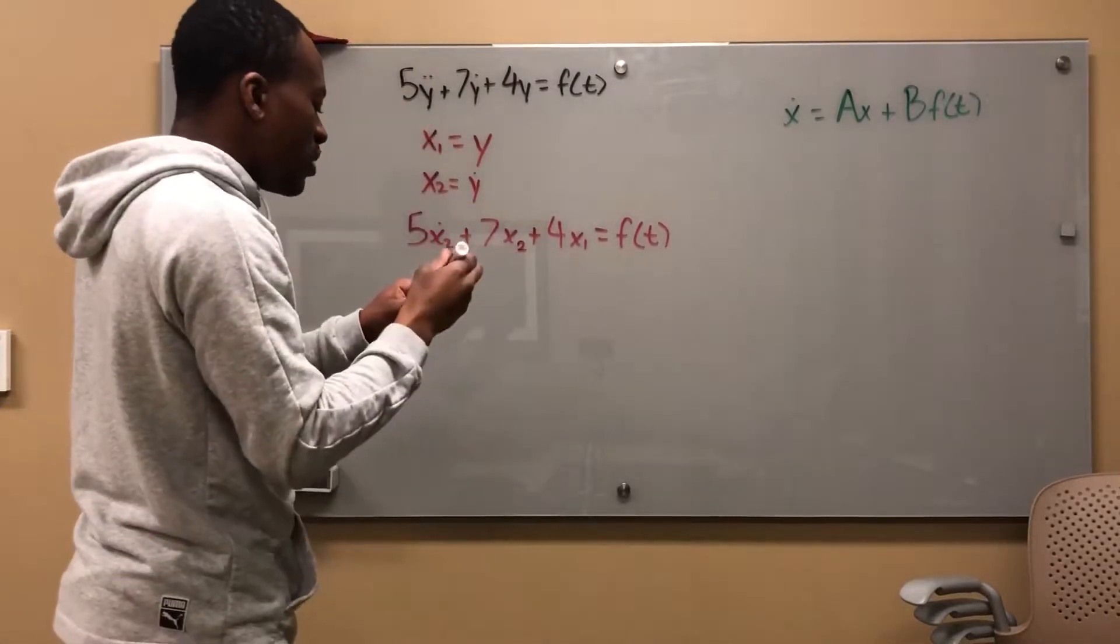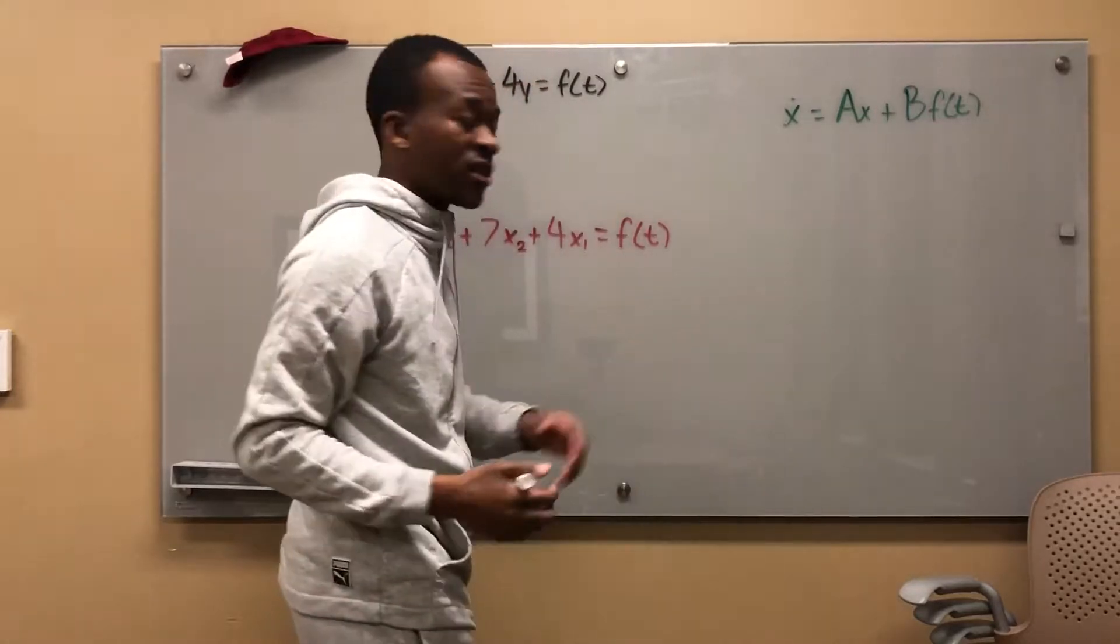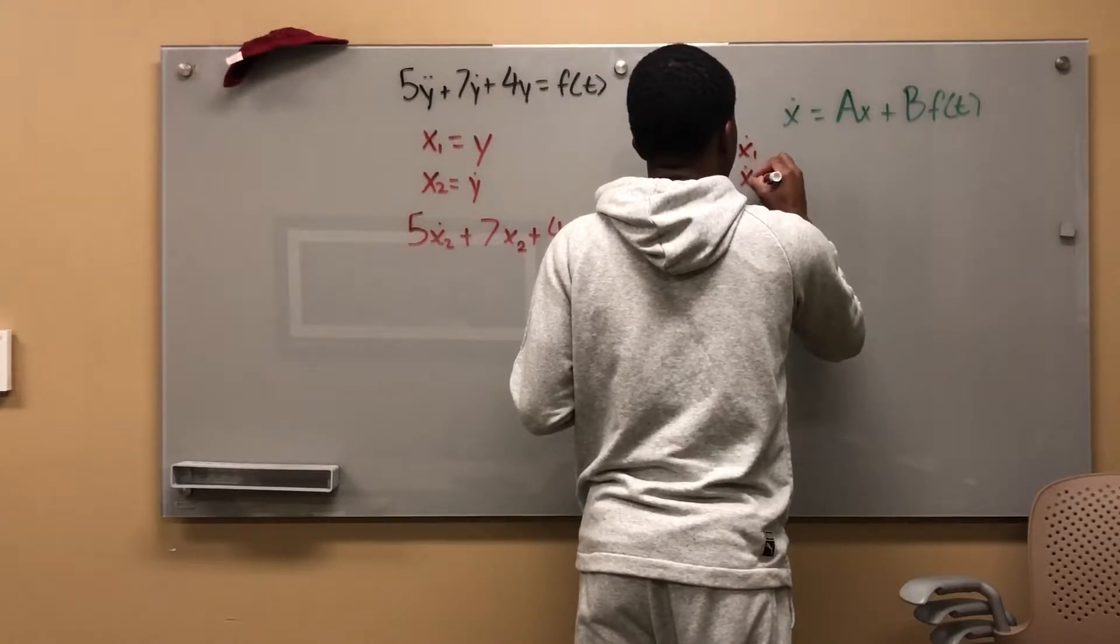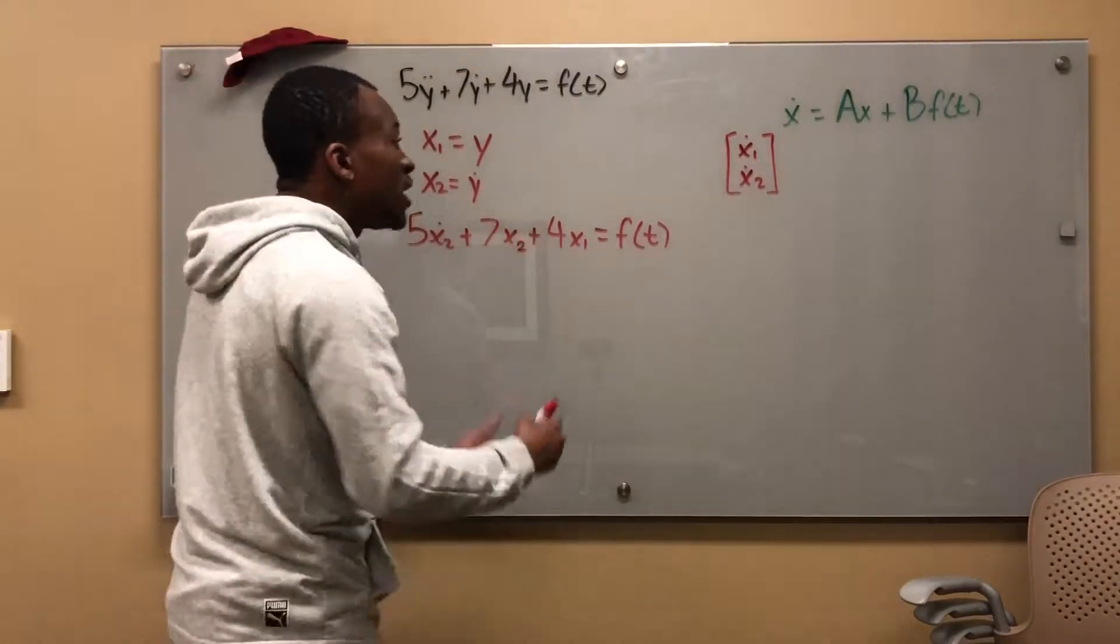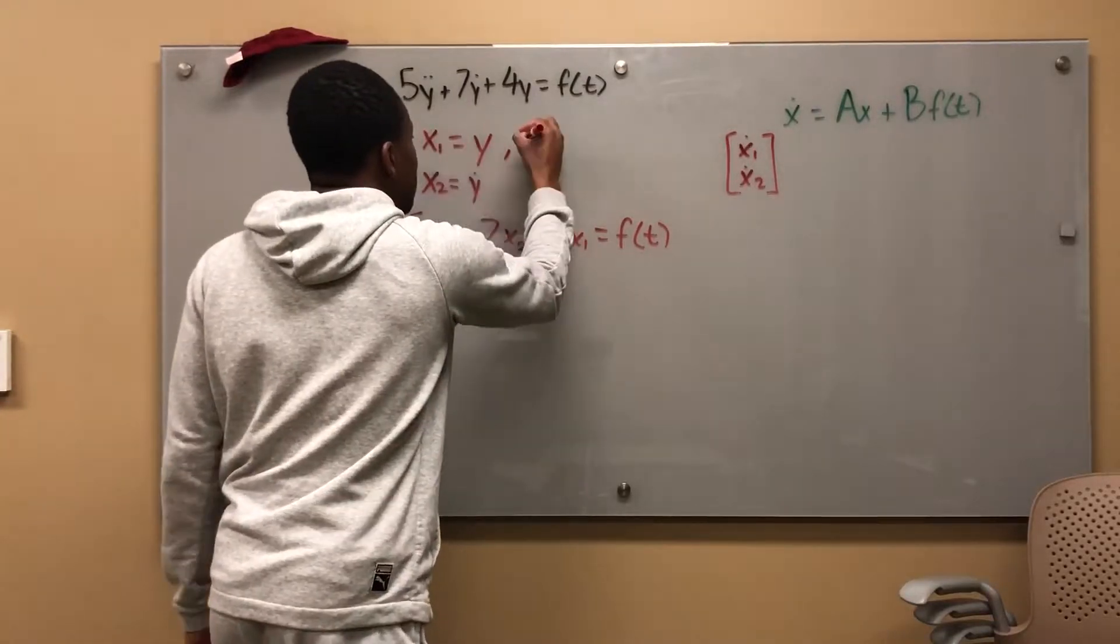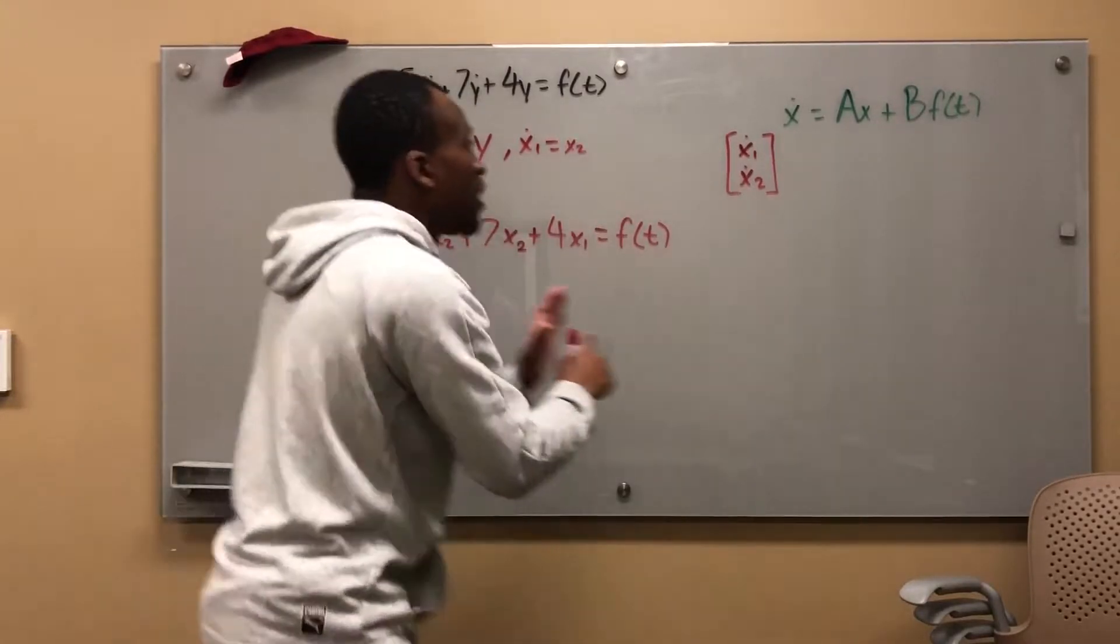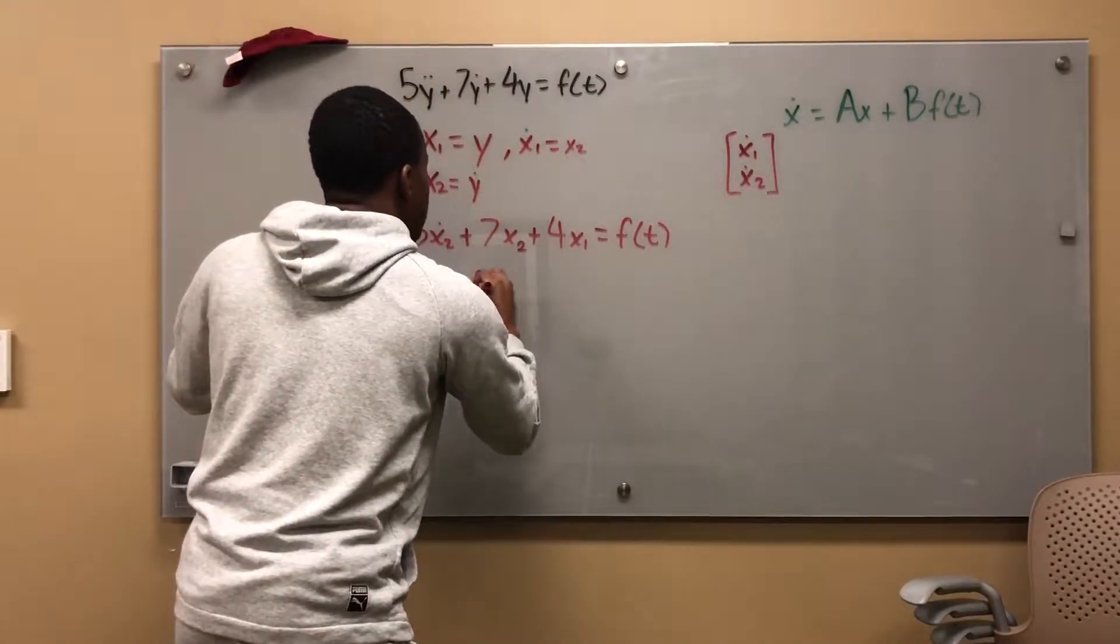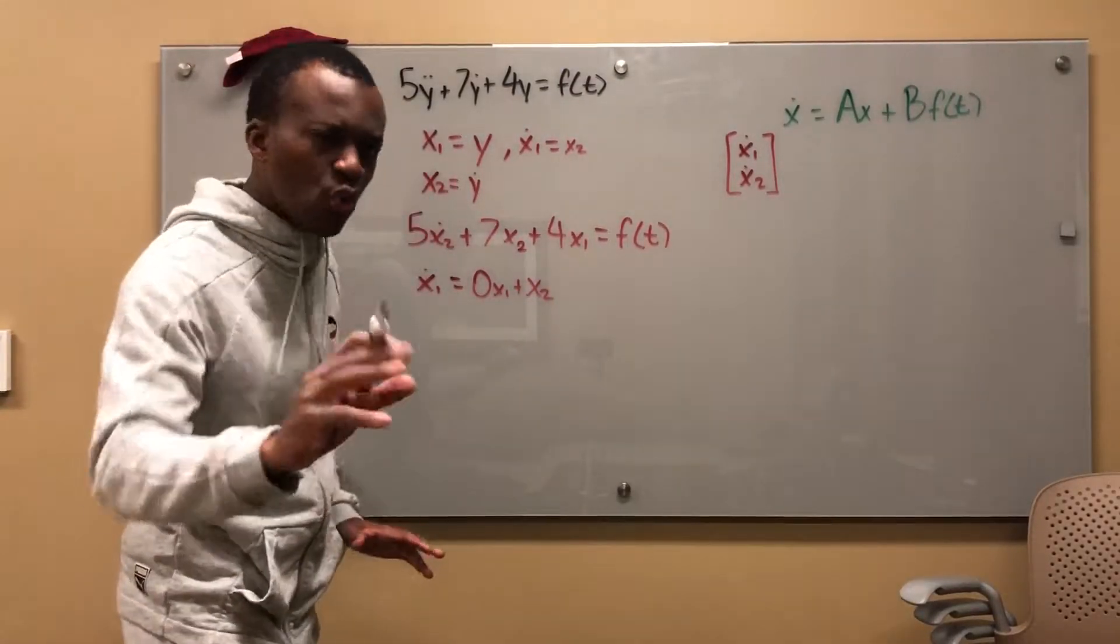Basically we want this to be a column vector consisting of x_1 dot and x_2 dot. So I need something to define my x_1 dot and my x_2 dot. I've already said that x_1 dot is simply equal to x_2. I'm trying to sum this up in terms of x's now. And x_1 dot is equal to 0x_1 + x_2, just so we can see that there's no x_1 there.